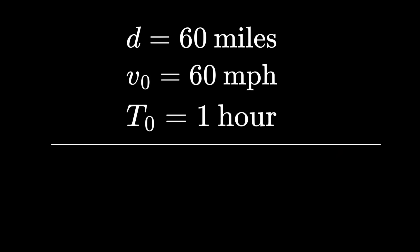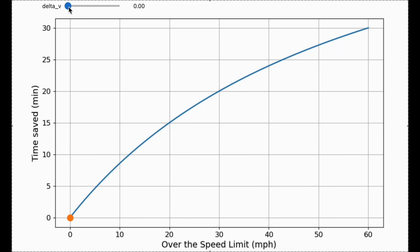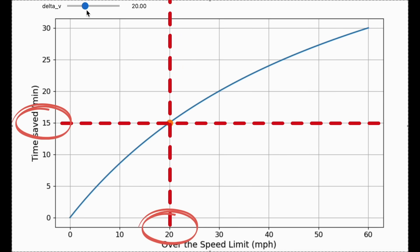Let's apply this to our opening example. The relationship between time saved and speed increase looks like this. Certainly not a linear line. I can read off here. To save 15 minutes on a 60 mile trip, you need to drive 20 miles per hour faster than the speed limit, not 15 and not 30. Let's dig further into this.